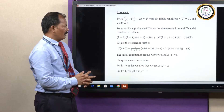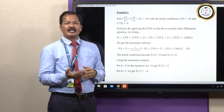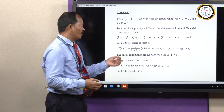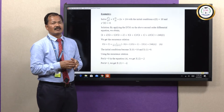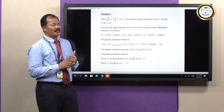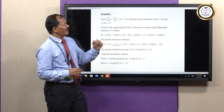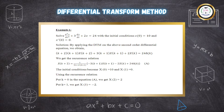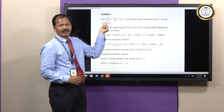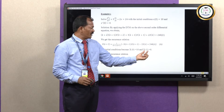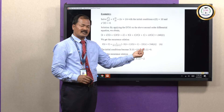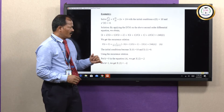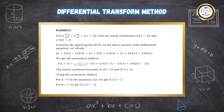Now, the initial conditions x of 0 equals 10 and x-prime of 0 equals 0 are transformed using Theorem 4 to give capital X of 0 equals 10 and capital X of 1 equals 0. We then need to find capital X of 2, X of 3, X of 4, and so on.